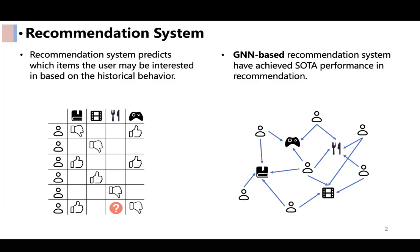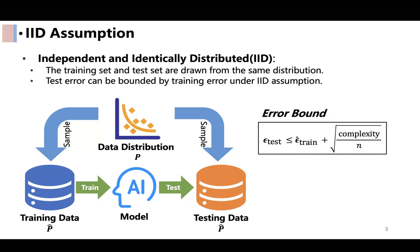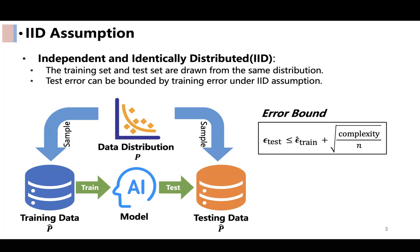In traditional recommendation, we usually operate under the IID assumption that the training and test sets follow the same data distribution. Under this assumption, the test error can be bounded by the training error, providing theoretical guarantees for the model's performance.